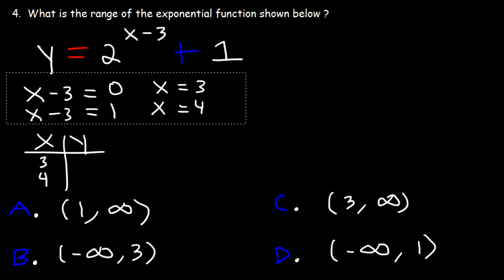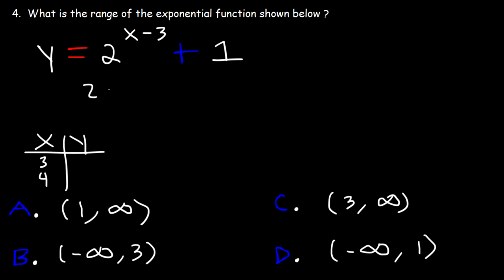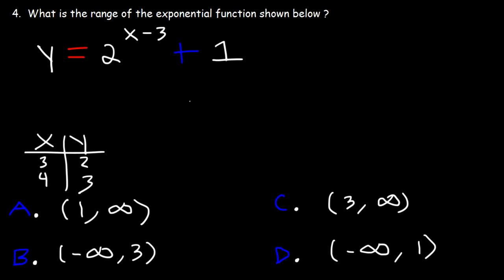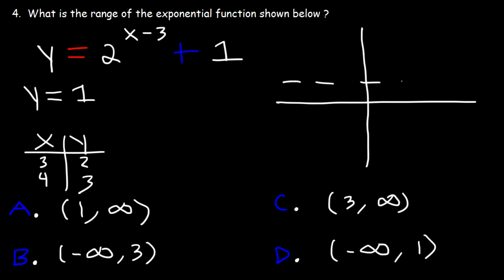When x is equal to three, three minus three is zero, two to the zero is one, one plus one is two. And when x is equal to four, four minus three is one, so we get two to the first power plus one — that's two plus one, that's three. And then we have the horizontal asymptote, which is y equals one. So we have the point three comma two and four comma three.